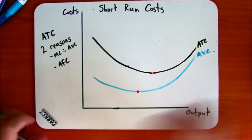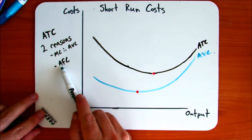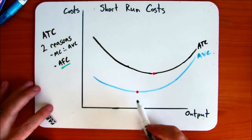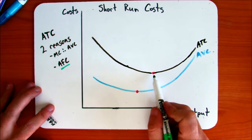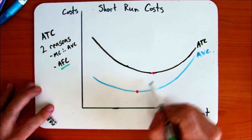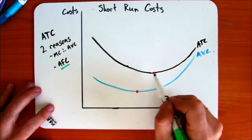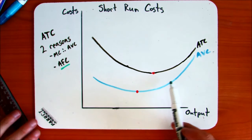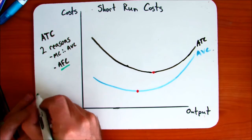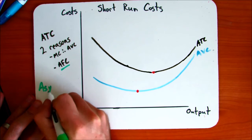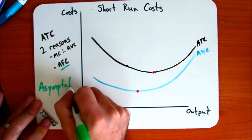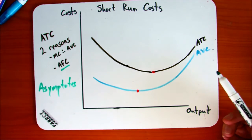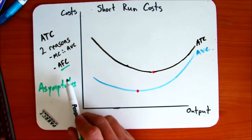To explain the second reason for ATC falling — which is AFC — I redrew just for clarity. Note that I kept the lowest point of AVC and ATC, that is where marginal costs would have intersected them, there for reference. Something to notice here is that the space between AVC and ATC gets smaller and smaller, yet they never quite meet. Mathematically, they're what are called asymptotes — curves that get smaller and smaller but never meet. This reflects what we're going to see in the AFC curve.